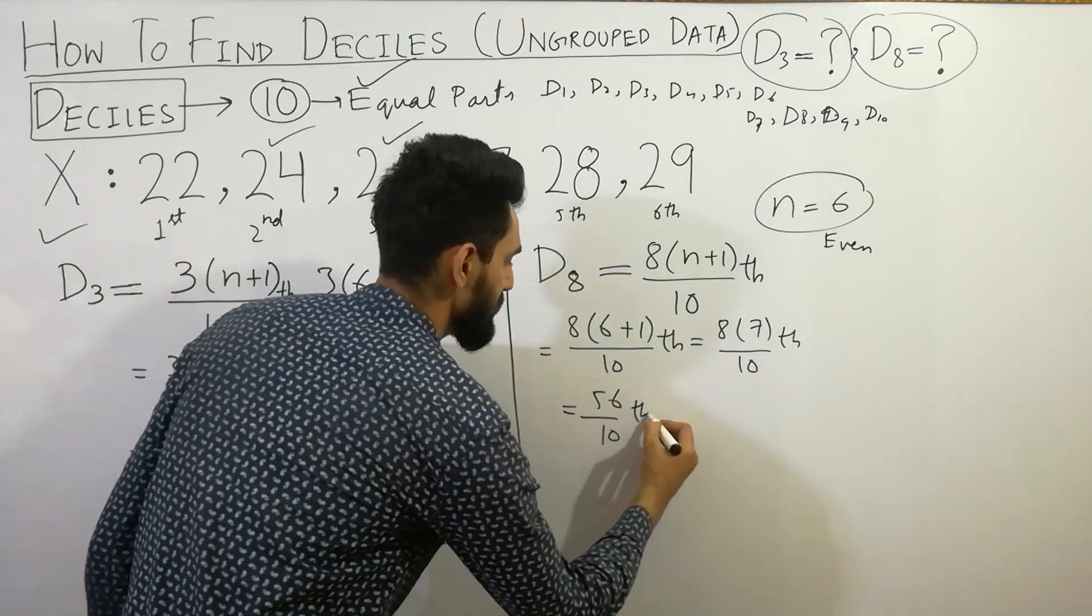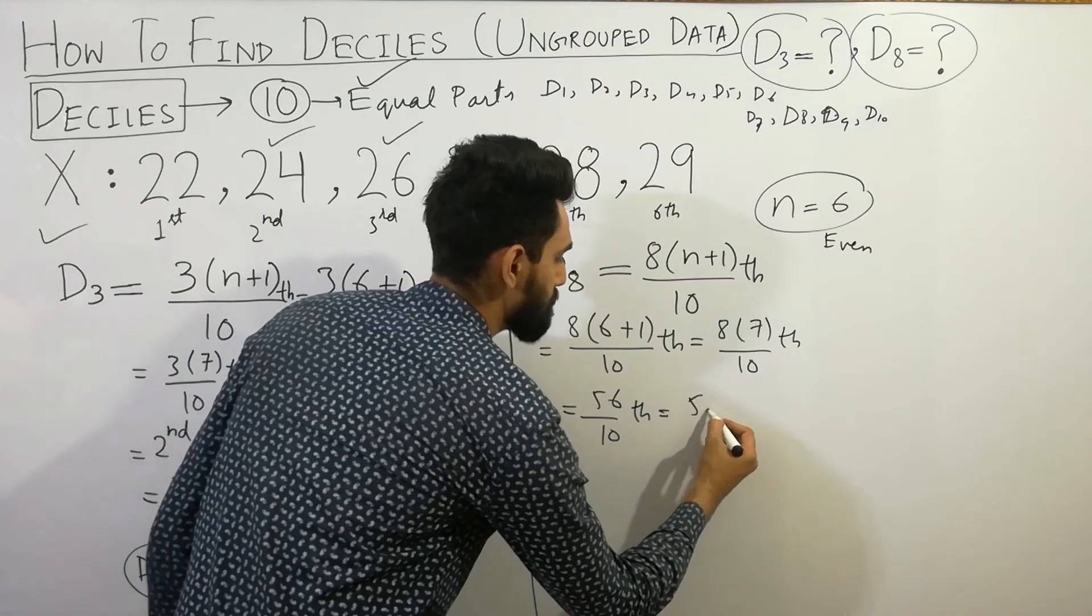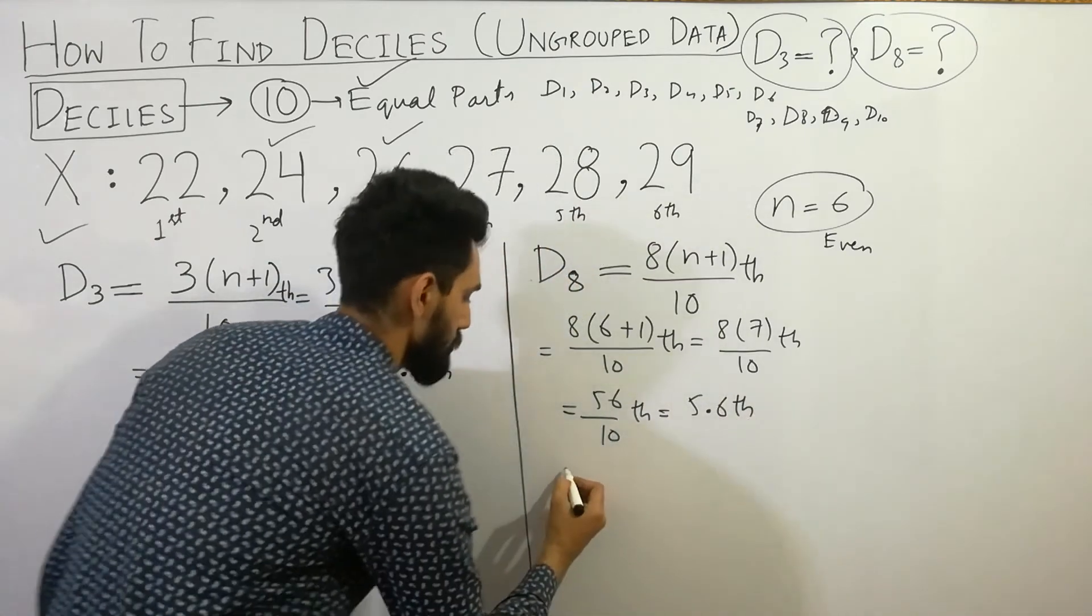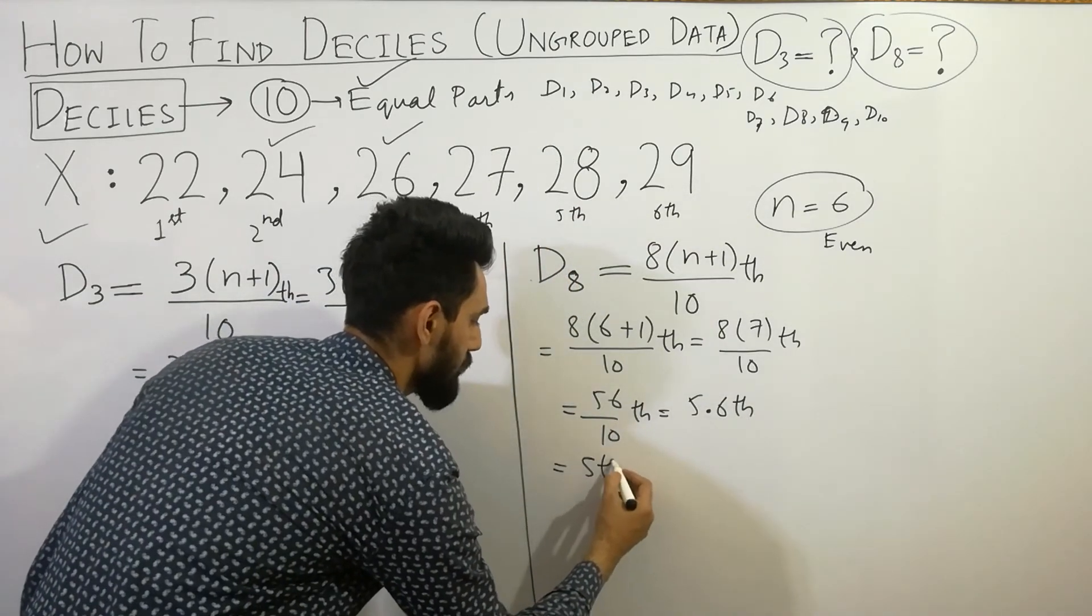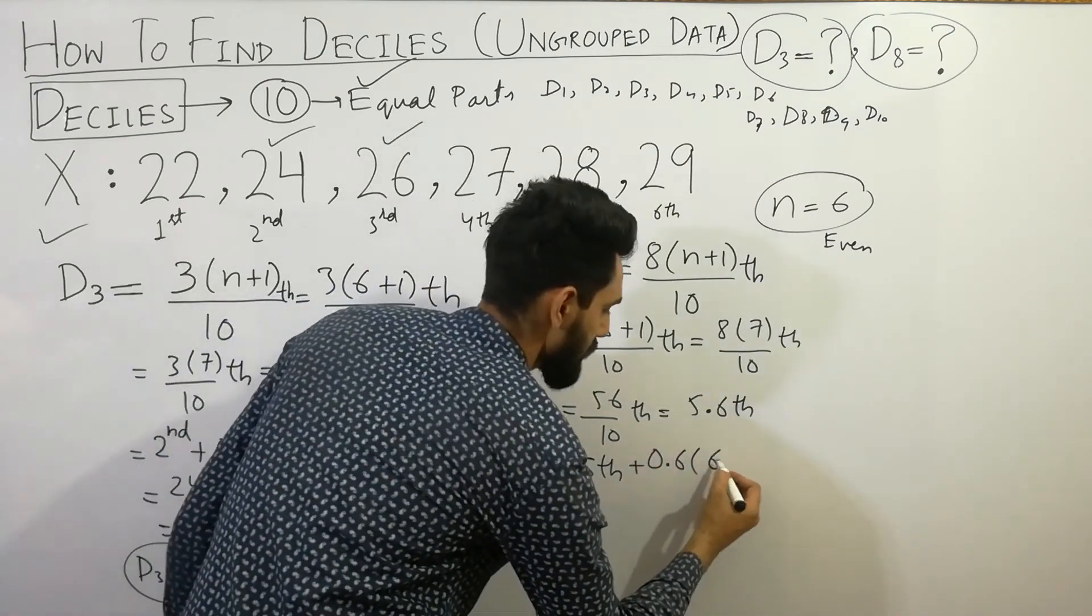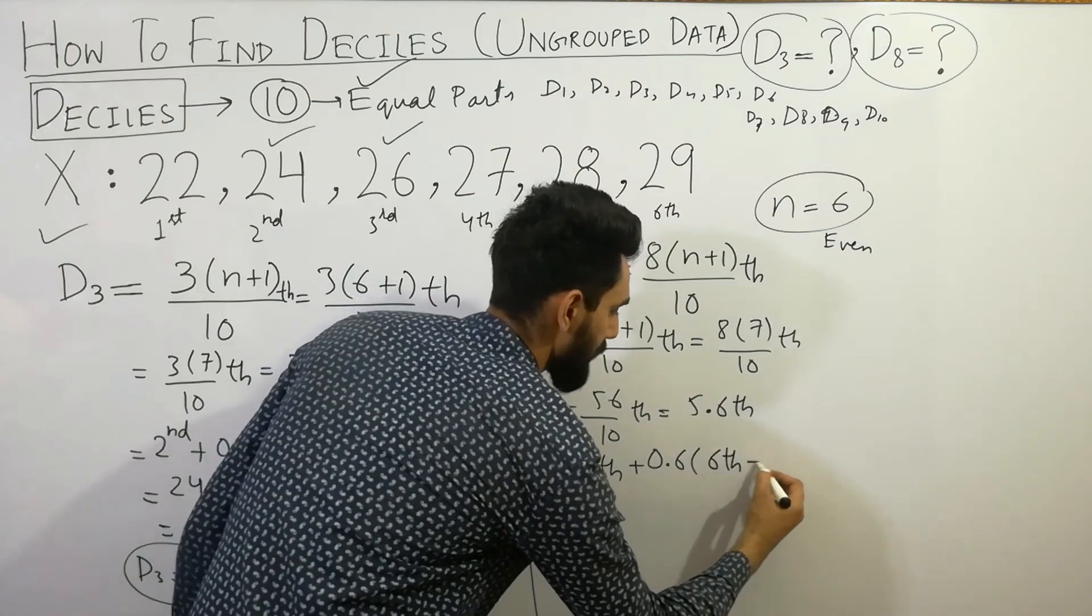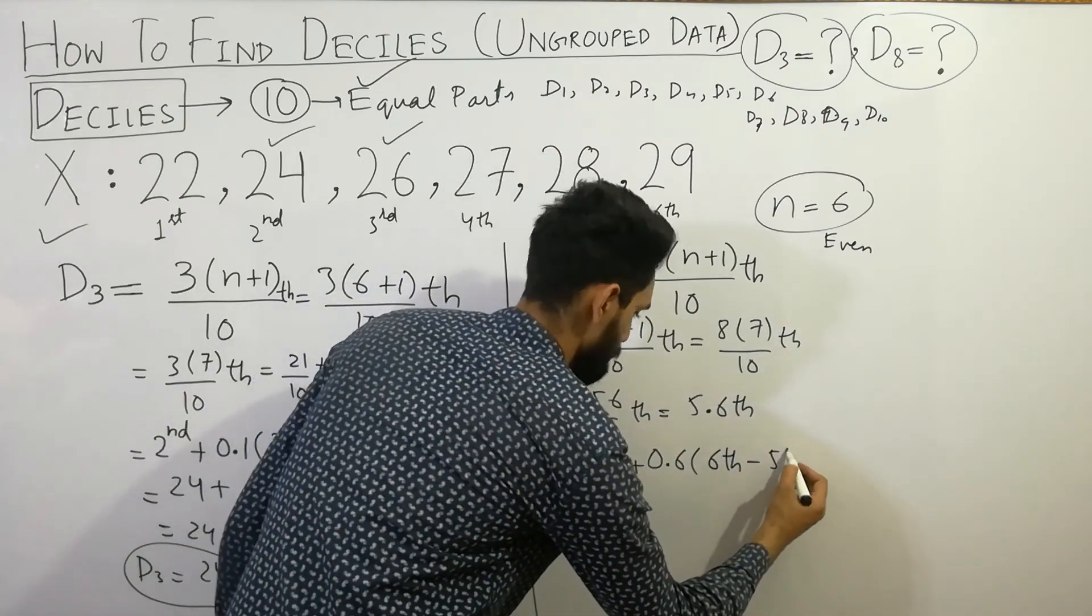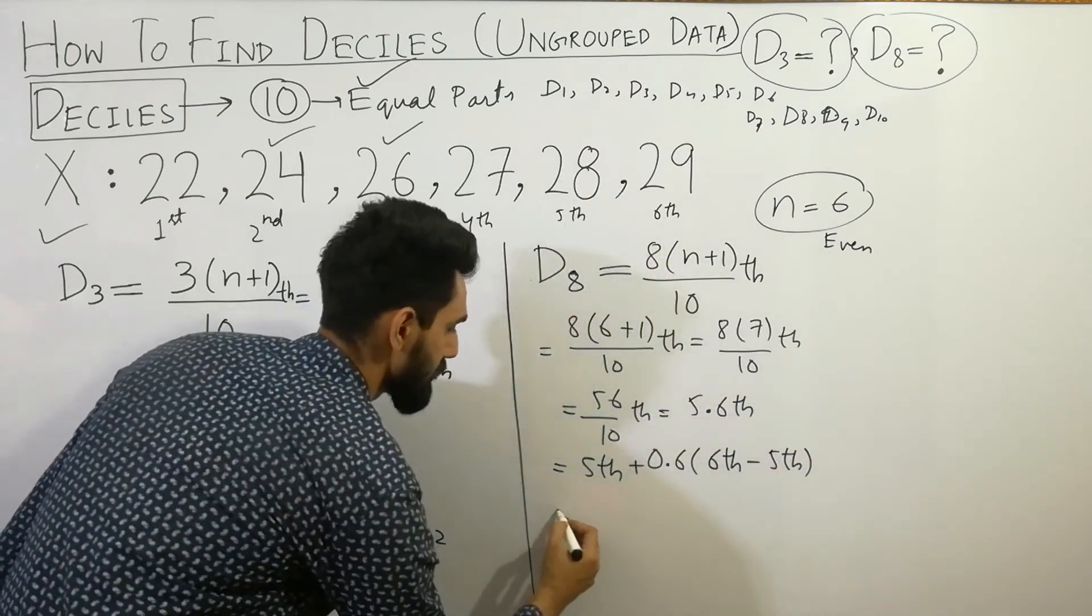We'll get 5.6 terms. Look how easily we calculate: 5th term plus 0.6 bracket next term will be 6th term minus 5th term.